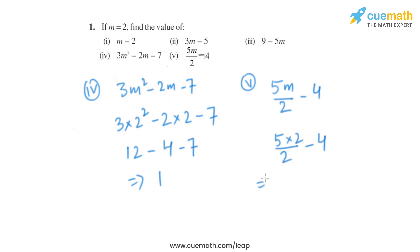So 2 divided by 2 is basically 1, so it will be 5 minus 4, which is same as 1.